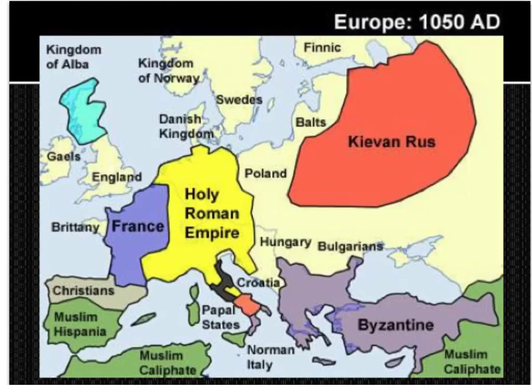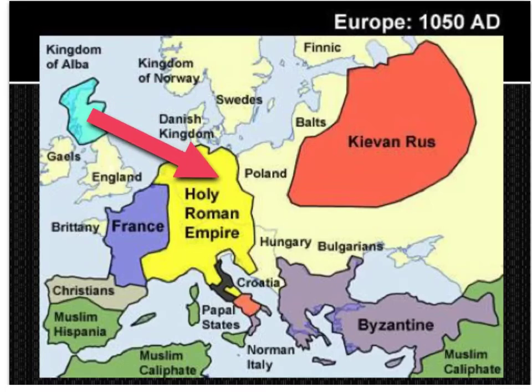We're going to take a look at a map of Europe in 1050 CE. Looking around, if you look at where the former Roman Empire was — the western half — we learned that it turned into the Kingdom of the Franks, where Charlemagne ruled.